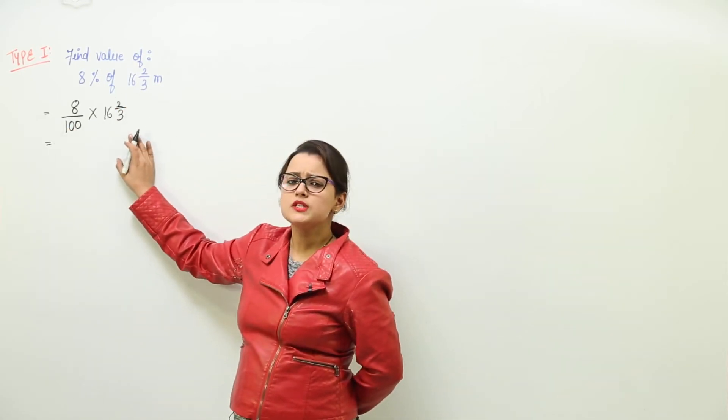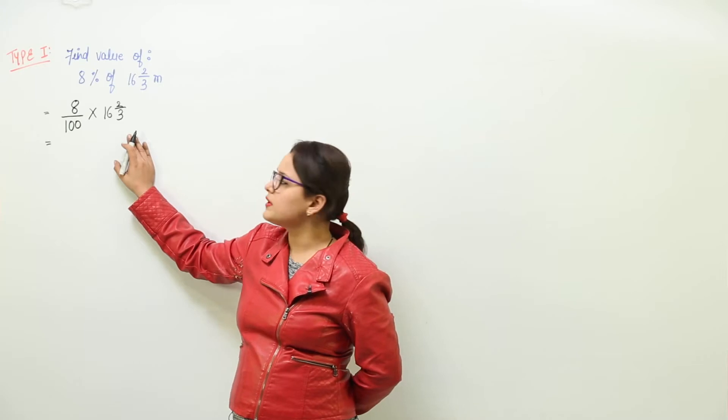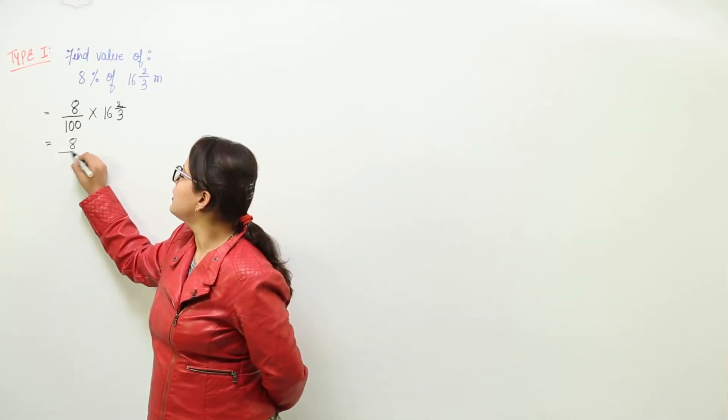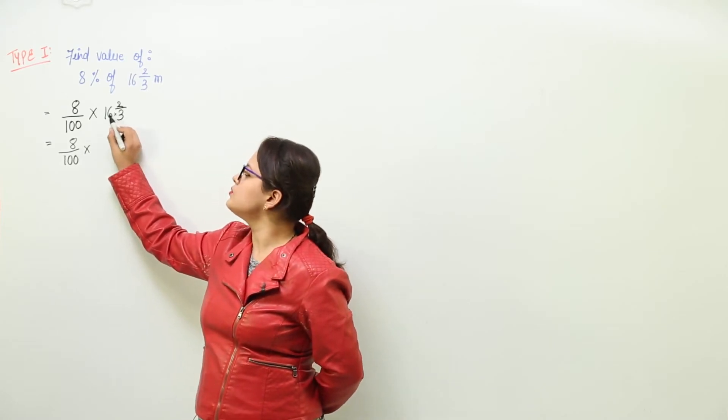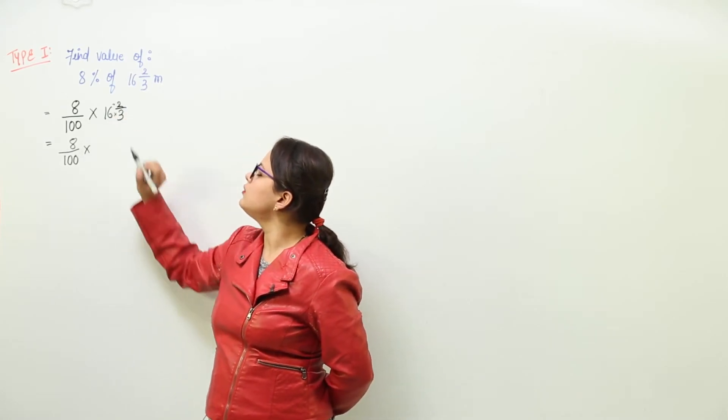Now if I ask you to convert the mixed fraction into a vulgar fraction, how would that be done? As we have learnt, that will be done by multiplying 3 into 16 and adding 2 to it.